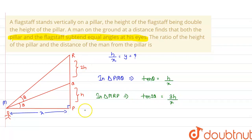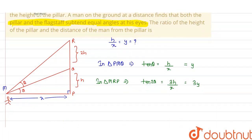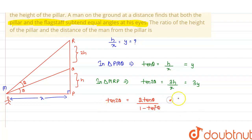Since h/x = y, the pillar height gives y and the total height gives 3y. Using the double angle formula: tan 2θ = 2 tan θ / (1 − tan²θ). So 3y = 2y / (1 − y²).